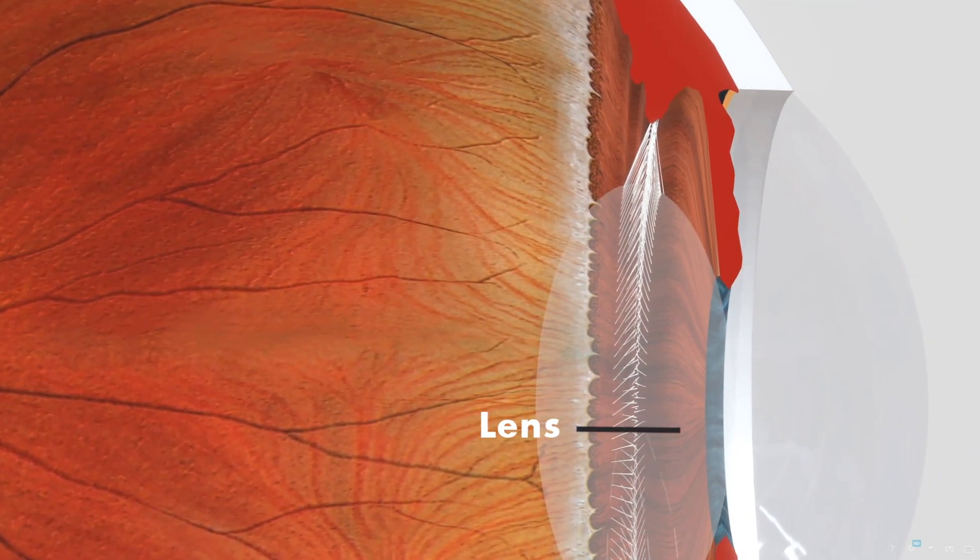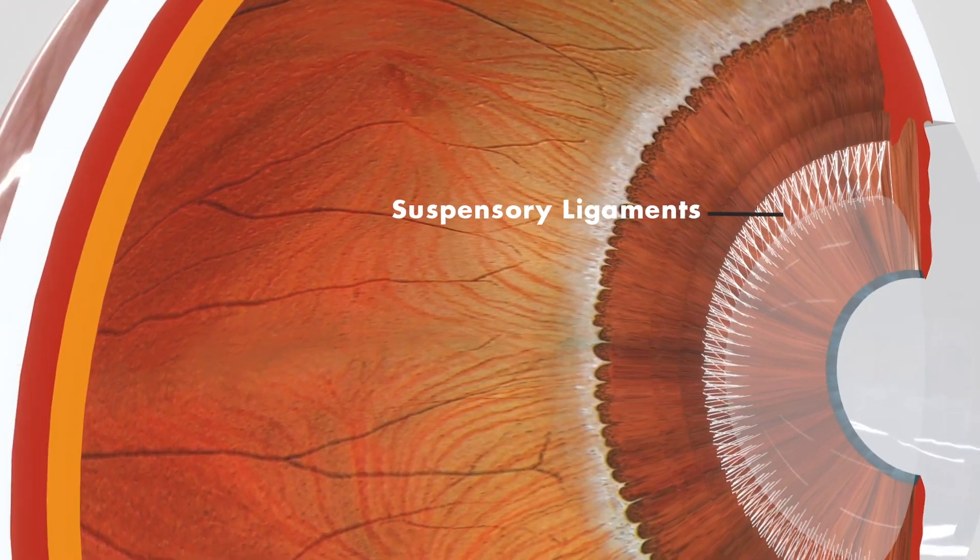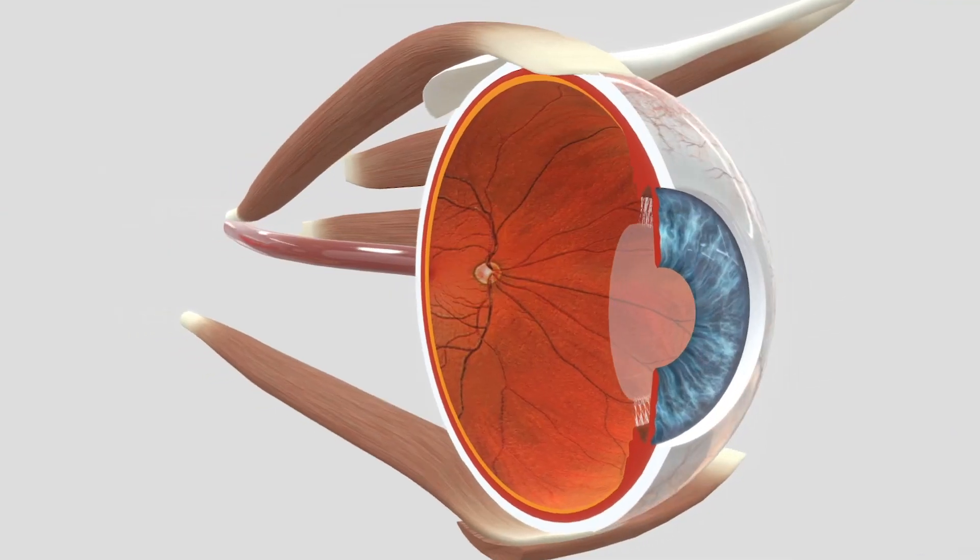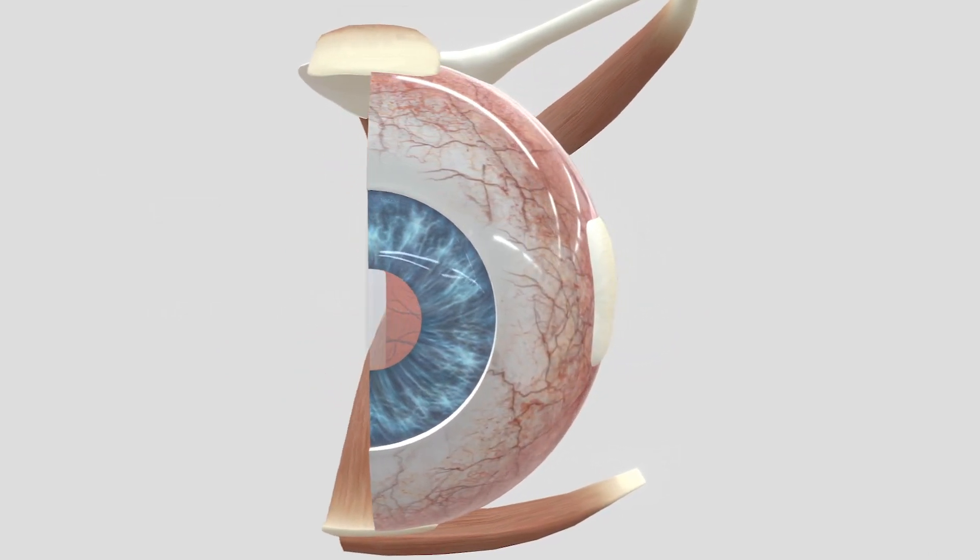The lens is attached to ciliary bodies with the help of suspensory ligaments. The middle layer contains iris, which is the visible part of the eye.